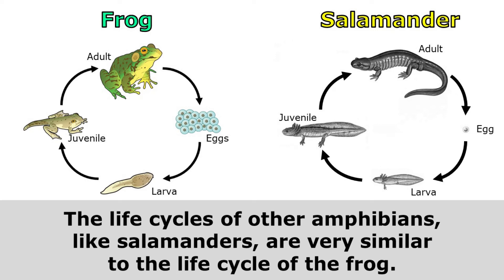The life cycles of other amphibians, like salamanders, are very similar to the life cycle of the frog. Adults lay eggs, which hatch into larvae, which grow into juveniles, which become adults. So, all amphibians have a very similar life cycle.